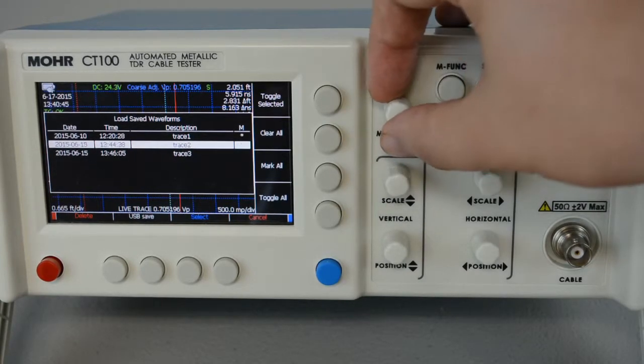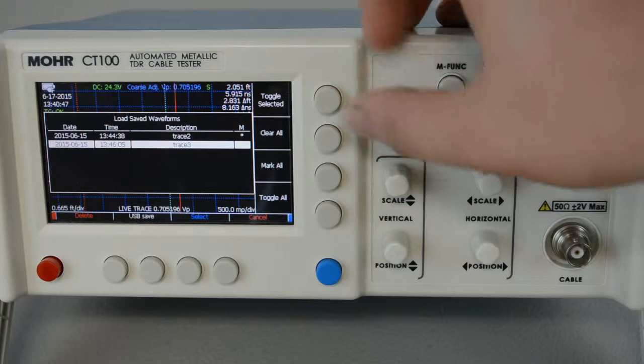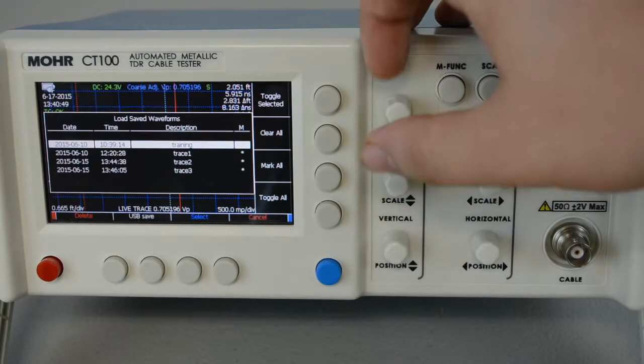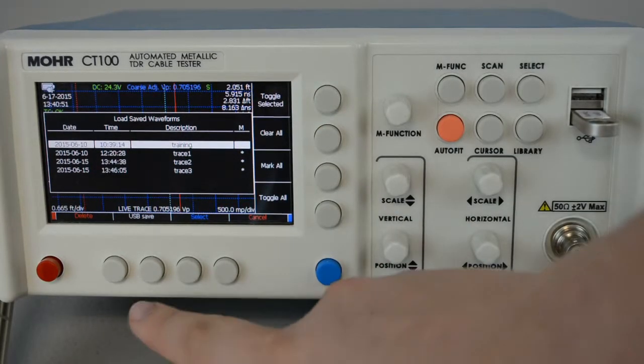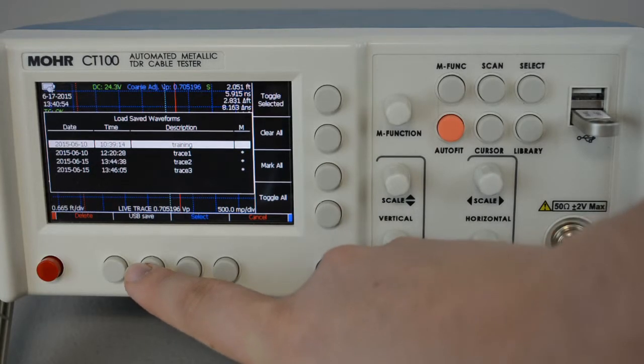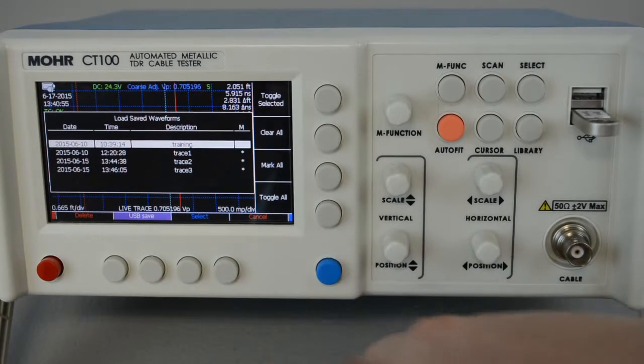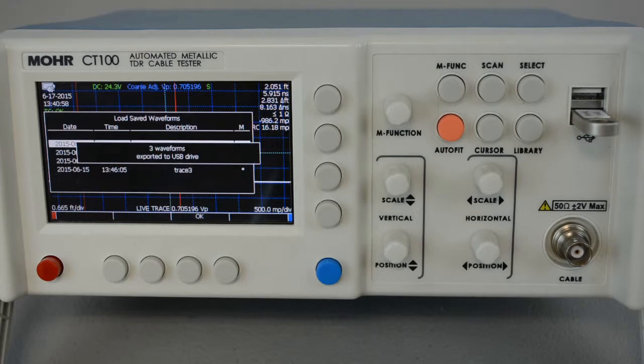I want to take trace 1, trace 2, and trace 3. Then when you have selected which ones you want to export, simply press the USB save button. It may take a long time to save the traces, but just be patient.